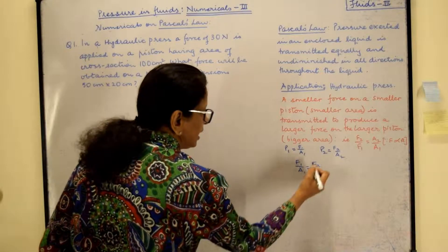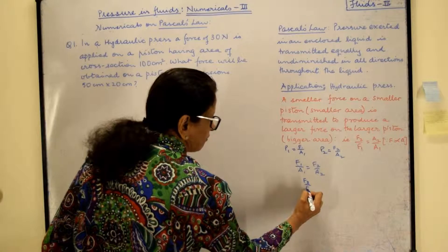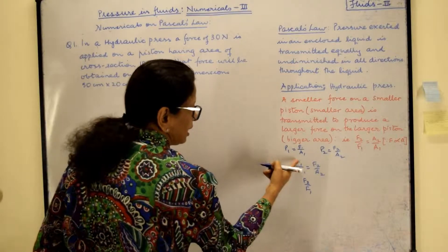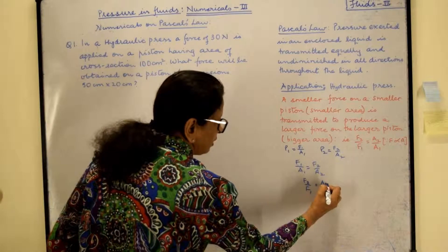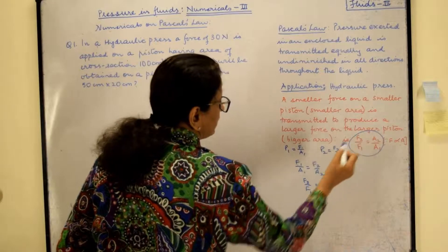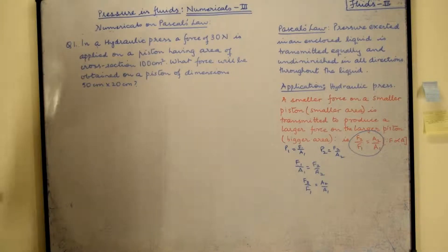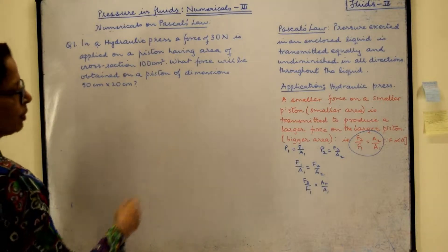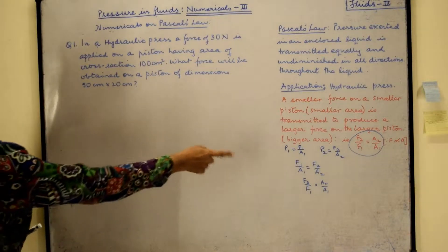So if you rearrange these terms, you will have F2 upon F1. I have taken F1 this side so A2 will come the other side, that will be A2 upon A1. And this is the formula that we will be using for these calculations. What is the formula? F2 upon F1 is equal to A2 upon A1. So you see that the force becomes inversely proportional to the area because of the formula that we've derived from here.